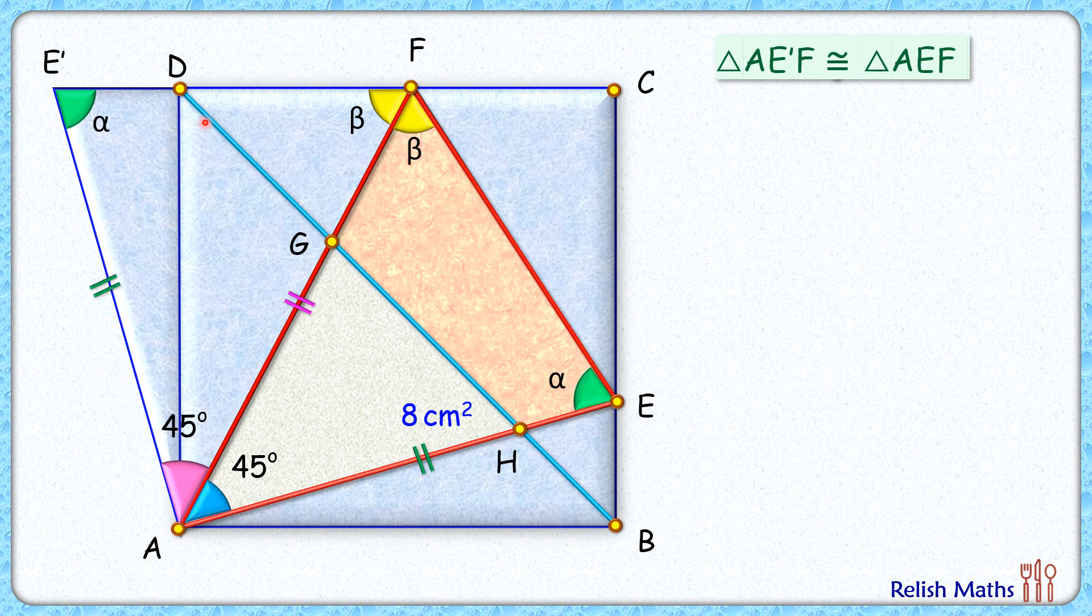In this triangle, alpha plus beta plus 45 equals 180 degrees. Now we know that in a square, the angle between side and diagonal is 45 degrees. And as the sum of these angles is 180, this remaining angle will be alpha degrees.